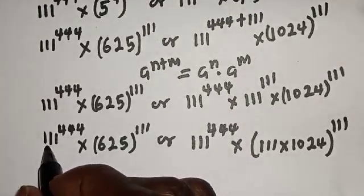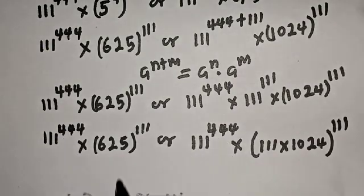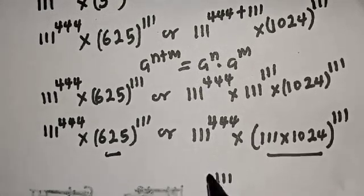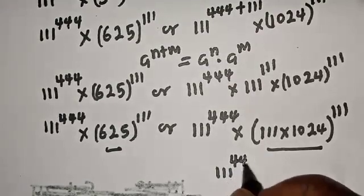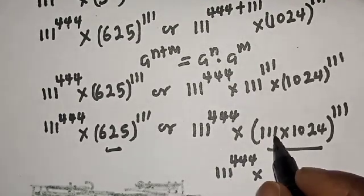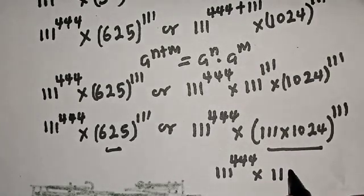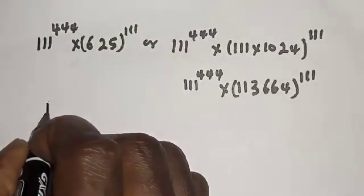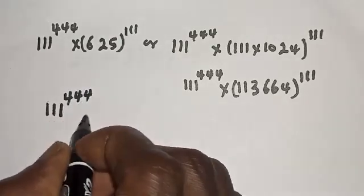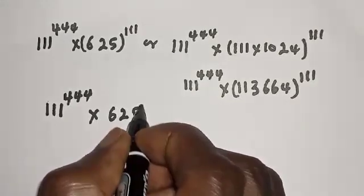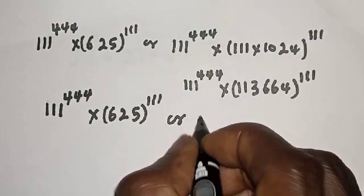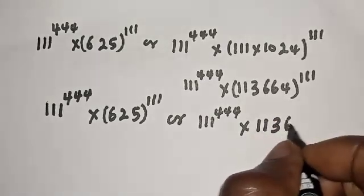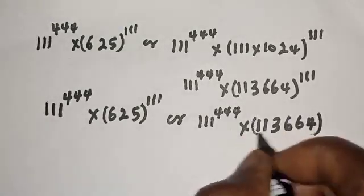From here, both sides share the factor 111 raised to power 444, so we can ignore it. We then compare 625 raised to power 111 versus 111 times 1024, raised to power 111. Since 111 times 1024 equals 113664, we compare 625 raised to power 111 versus 113664 raised to power 111. Since 113664 is greater than 625, the right side is larger.